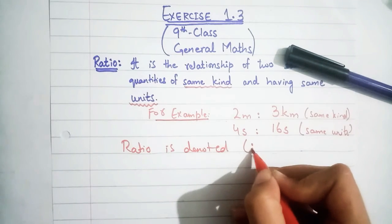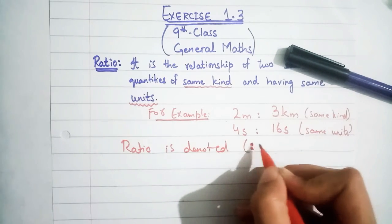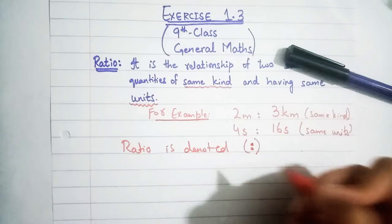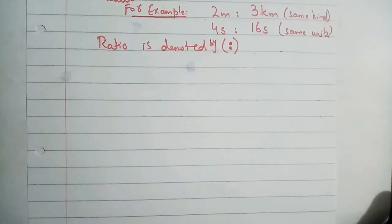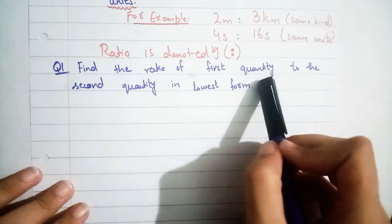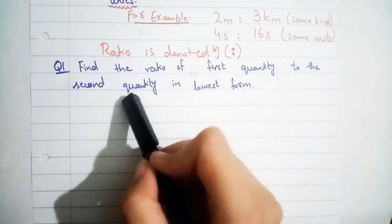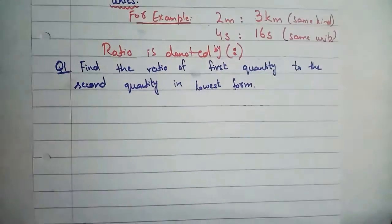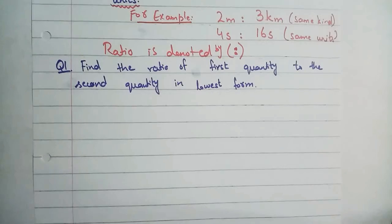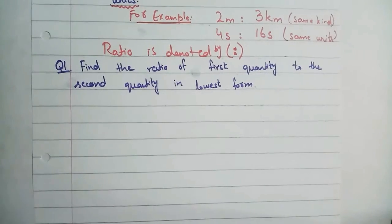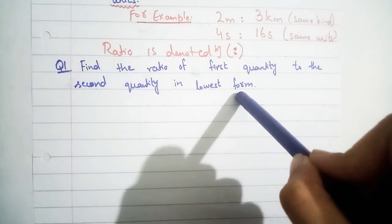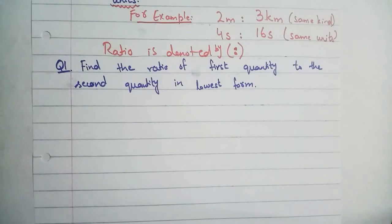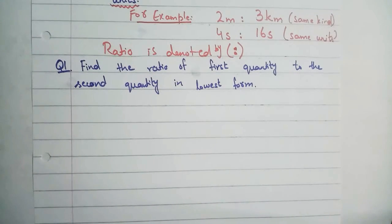Let's begin the exercise now. Question number one: find the ratio of the first quantity to the second quantity in the lowest form. You have two quantities with the same units, find their ratio in lowest form — meaning you have to simplify by cancelling common factors.